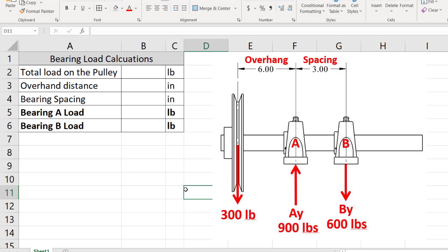Now I am going to jump over to an Excel spreadsheet, because I really want to help you see how important the overhung distance and the bearing spacings are to the calculation of the loads. So let's create a spreadsheet. The total load on the pulley, if you remember, was 300 pounds. The overhung distance was 6 inches, and the bearing spacing was 3 inches.